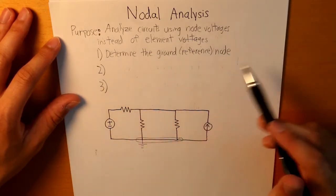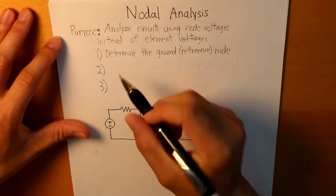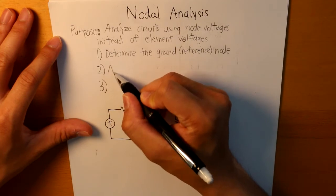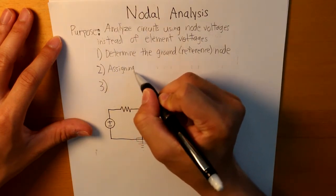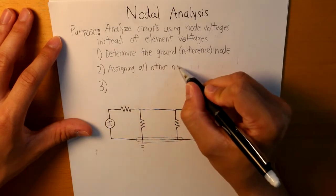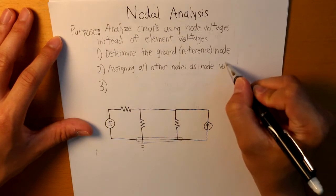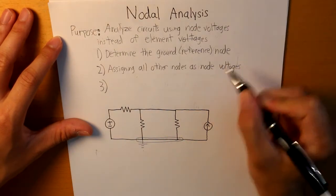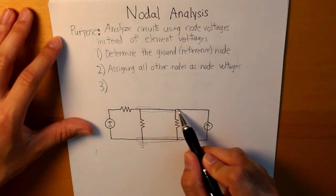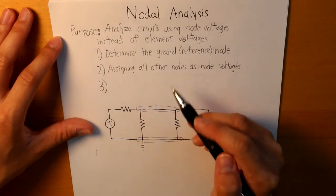And then after determining our ground node, the second step includes assigning all the other nodes as node voltages. And that includes just one node, which is this one above here, that would be considered our node voltage.